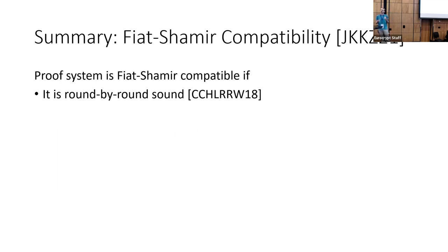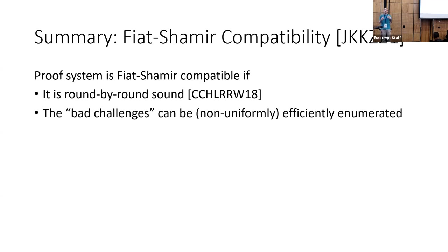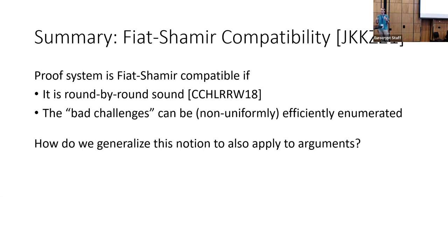Starting with the first point: an overview of Fiat-Shamir compatibility as originally defined for proofs. We say a proof is Fiat-Shamir compatible if it is round-by-round sound — meaning at every round there is only a small number of possible bad random challenges the verifier can give, and as long as the verifier never makes any of these bad challenges, no prover can fool the verifier. On top of this, we require that this set of bad challenges can be efficiently enumerated. Now we want to ask: can we generalize this notion to also apply to arguments? The notion of round-by-round soundness is very specifically defined for proofs, and it's not immediately clear how to define it for arguments, though previous works have been successful in compressing interactive arguments in similar ways.